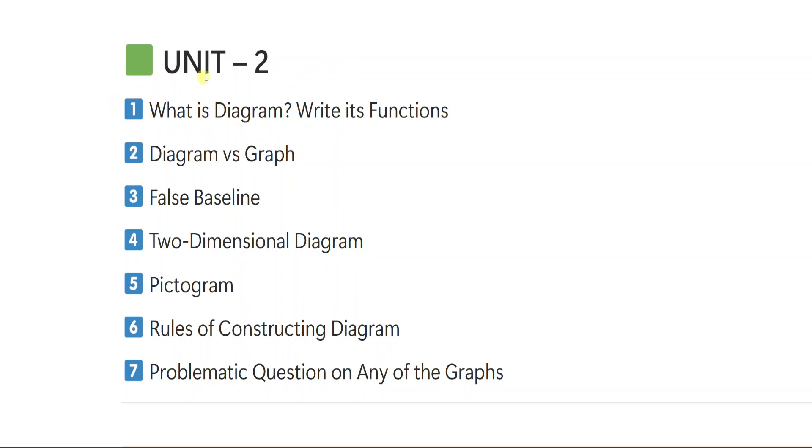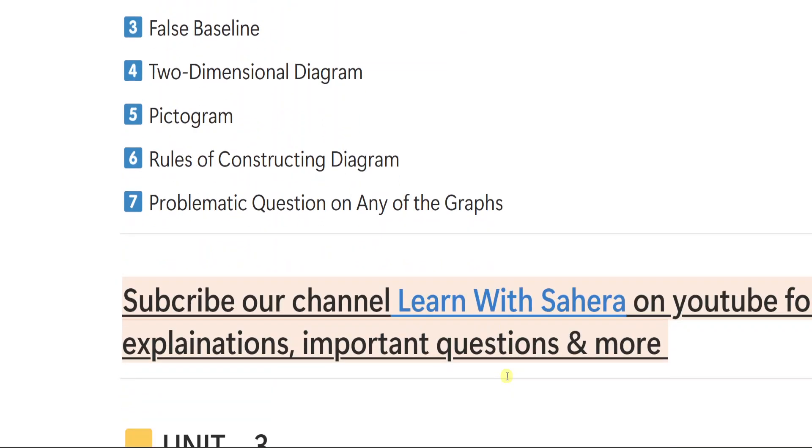From unit number 2, first important question is what is diagram, write its functions. This question have also been covered in long diagram versus graph. Third one is false baseline. Fourth is two-dimensional diagram. Fifth is pictogram. Six rules of constructing diagram. Seven problem question on any of the graphs. Any of the graphs means bar diagram or it can be Ojeet curve or histogram or pie graph. But mainly focus on bar diagram. Definitely you will be seeing a question in the short.